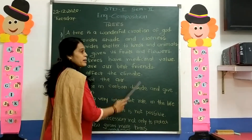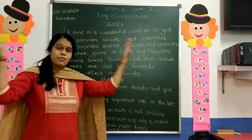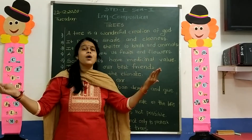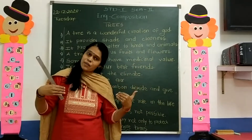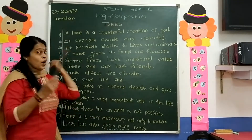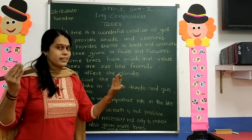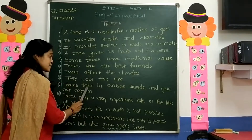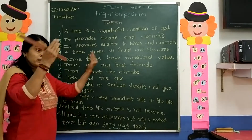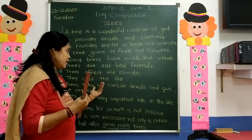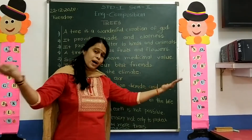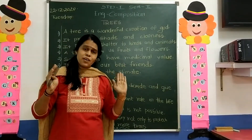Trees affect the climate. Jitni zyada trees hongi, utna pollution kam hoga. Aur hamaara vatavaran swachh hoga. They cool the air. Trees take in carbon dioxide and give out oxygen. Trees, what do they do? Carbon dioxide lete hain aur oxygen bahar dete hain, jo clean hoti hai.